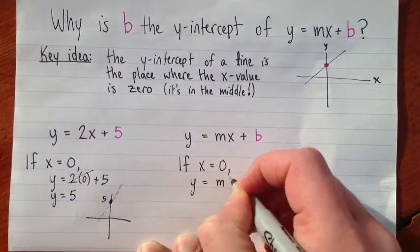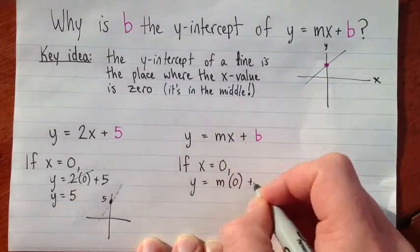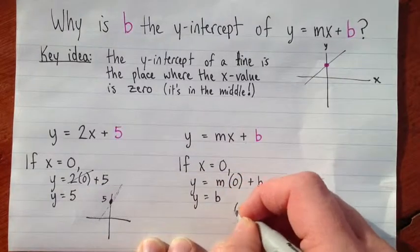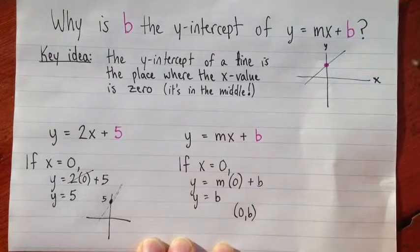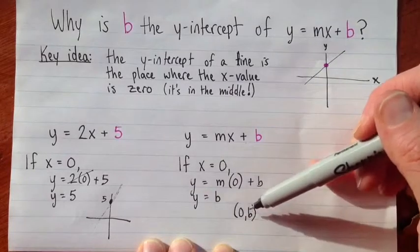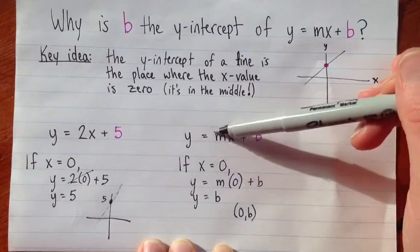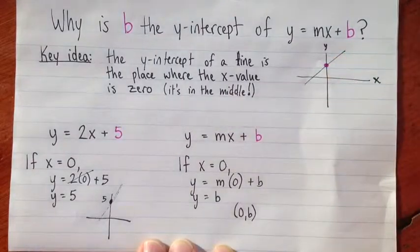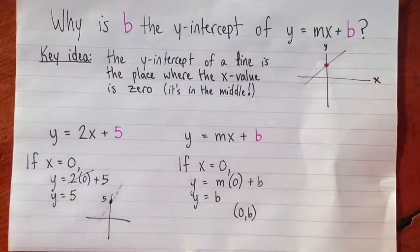So we get y equals m times zero, because I replaced my x with zero, plus b. Then we get y equals b. So that means that the point zero, b is the y-intercept. So I'm not going to sketch this one because we don't know if it's up high or down low. We don't know if b is positive or negative. But this is exactly the same thing that happened here. When we substitute x equals zero, this first part of the equation is zero, so it's like it just goes away, and we get y equals b. So that's why b is the y-intercept of the line y equals mx plus b.